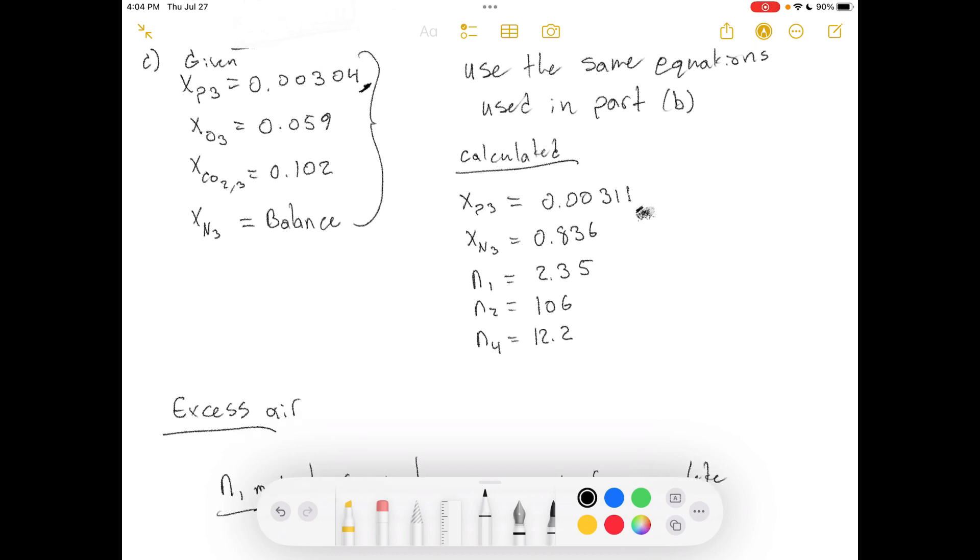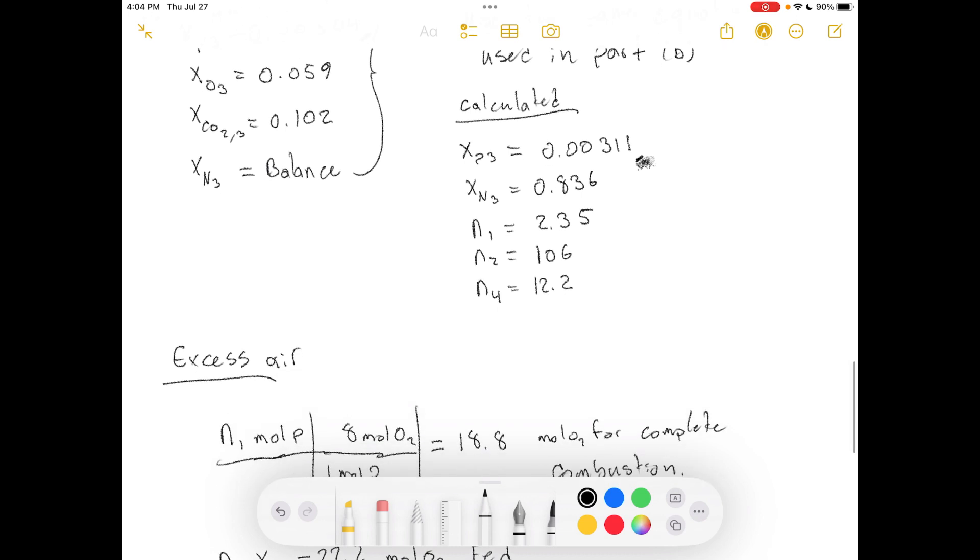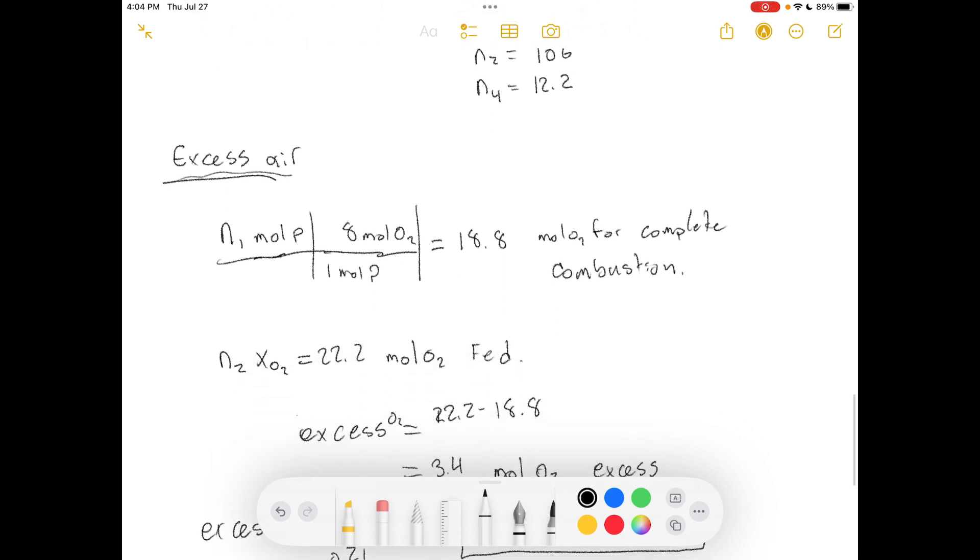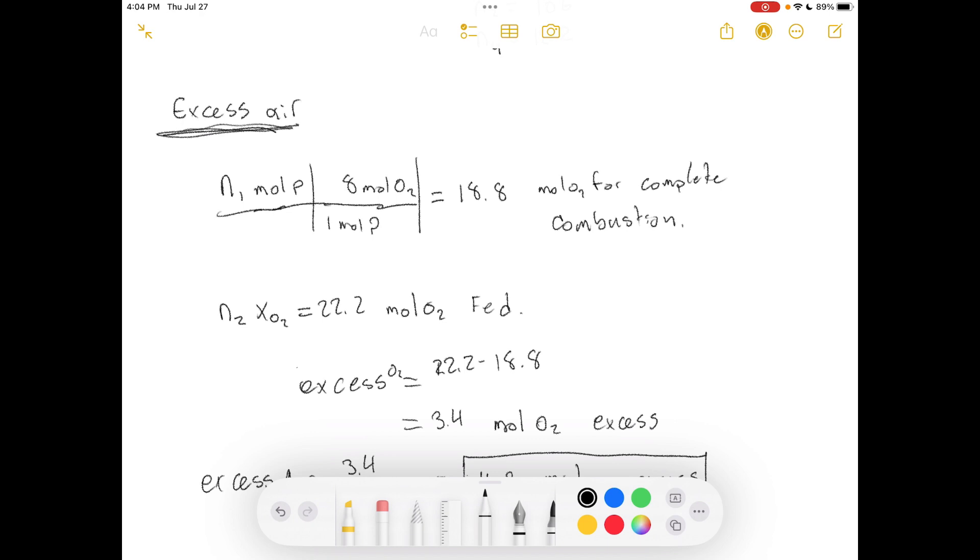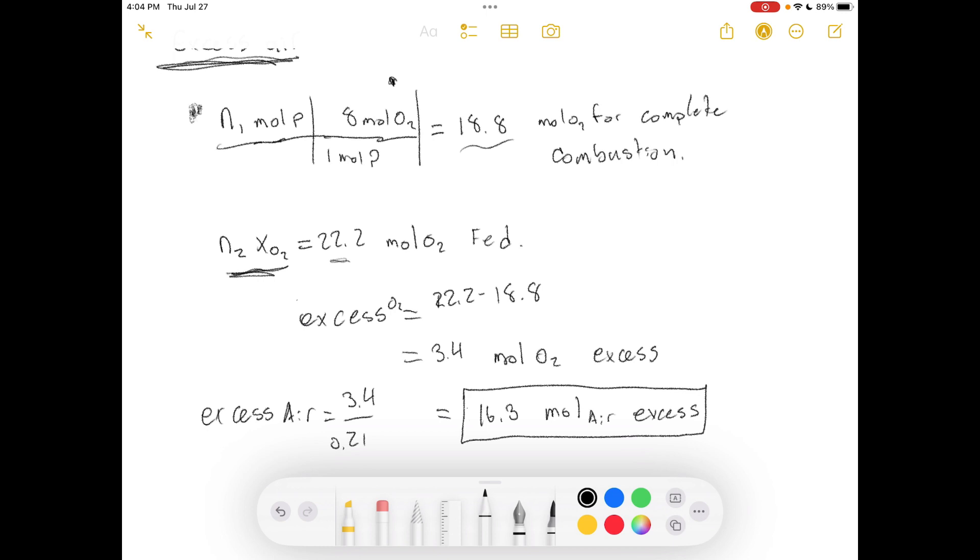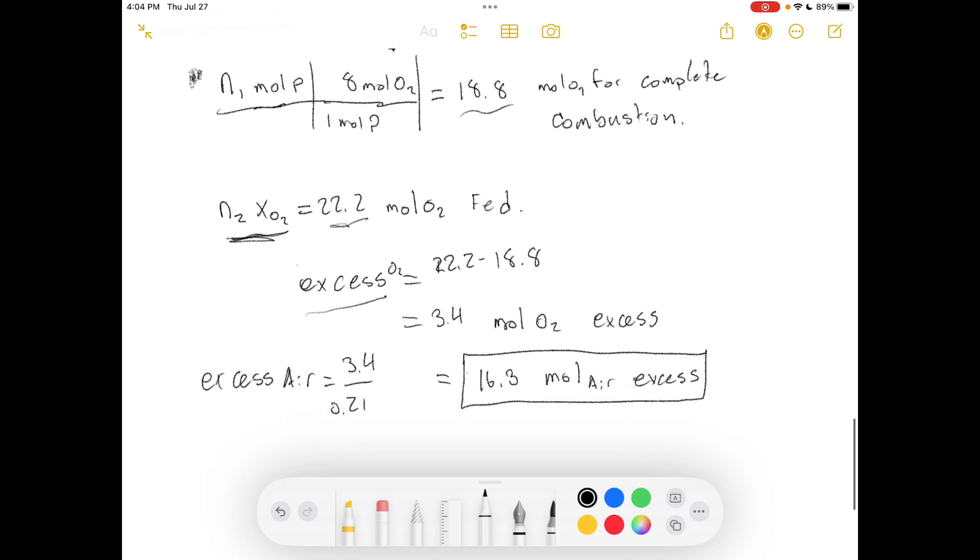Using our calculated values, not the measured values, I'm going to go ahead and calculate what the excess air is. And how you calculate that is you find out how much moles of pentane you have going in and how much oxygen would you need in order to fully combust that. So, you need 18.8 moles of oxygen to fully combust that. Well, how much oxygen was fed to the reactor? 22.2 moles of oxygen were fed. So, what's the excess? Well, that's this minus this. So, it's 3.4 moles of oxygen excess. Well, that's excess oxygen. What's the excess air? Excess air is, this is the moles of oxygen divided by what's the mole fraction of oxygen in air? That is 0.21. So, then the answer of excess air is here.